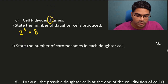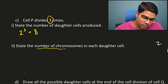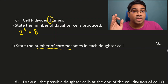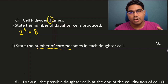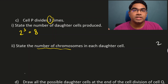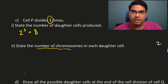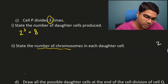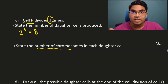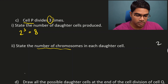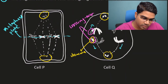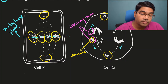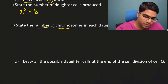State the number of chromosomes in each daughter cell. The number of chromosomes does not depend on the number of cellular divisions. In mitosis, the number of chromosomes is maintained - it remains as a diploid cell. In meiosis, the number of chromosomes is halved and it becomes a haploid cell. Since we are talking about mitosis for cell P, the number of chromosomes in the daughter cell will be exactly the same as the parent cell. Cell P has four chromosomes - one, two, three, and four - therefore the daughter cell will also have four. There is nothing to calculate here.